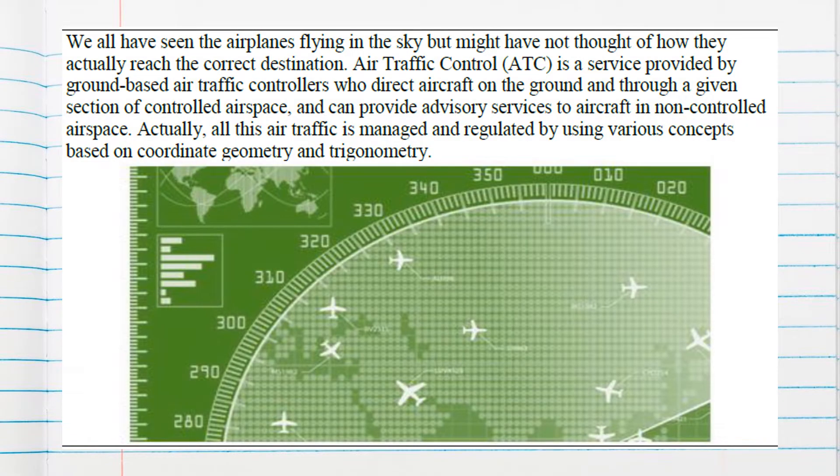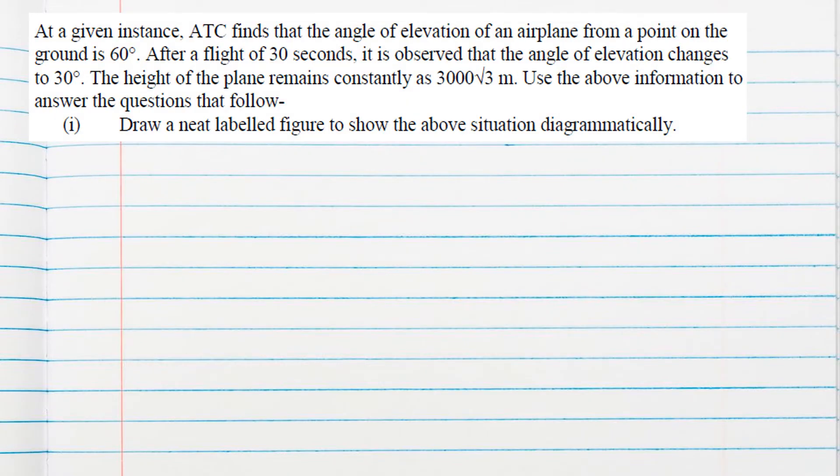Hello students, in this case study, we've all seen airplanes flying in the sky but might not have thought of how they actually reach the correct destination. Air traffic control (ATC) is a service provided by ground-based air traffic controllers who direct aircraft on the ground and through a given section of controlled airspace. Our main question starts from here.